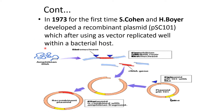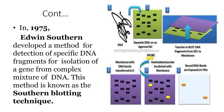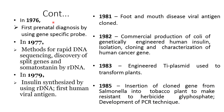In 1975, Edwin Southern developed a method for detection of specific DNA fragments for isolation of a gene from a complex mixture of DNA. This method is known as the Southern blotting technique.